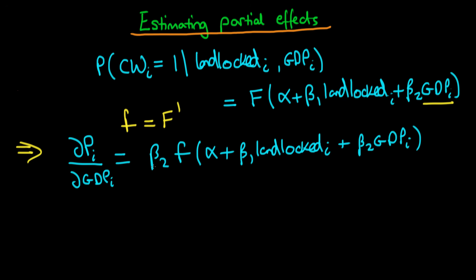Okay, so we've got a formula which expresses the partial effect of GDP, but it depends on both whether the country was landlocked and also the level of GDP. And if we had further explanatory variables here, it would also depend on all of those. So there's not one answer to what is the partial effect of GDP on the probability.